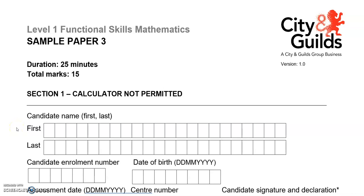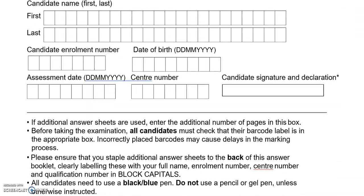This is the first part of Sample Paper 3 for Level 1 Functional Skills from City and Guilds. You can't use a calculator for this part and there is a total of 15 marks.